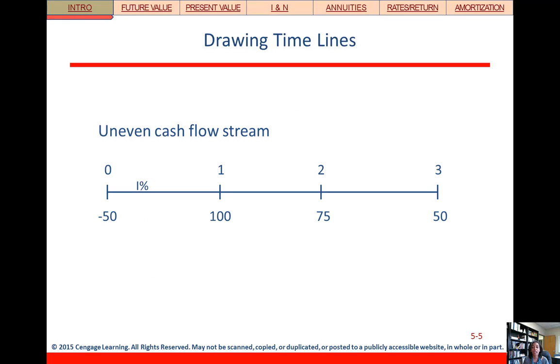What if we have an uneven cash flow stream? The timeline will still work, but what's happening here is that the individual cash flows are different. So now we've got a three year cash flow stream. We have a negative cash flow today, so it's going to cost us something to make money later on. So it's going to cost us $50, and then we expect to receive cash flows of $100, $75, and $50 over the next three periods.